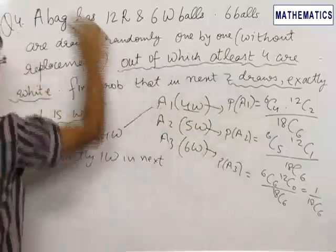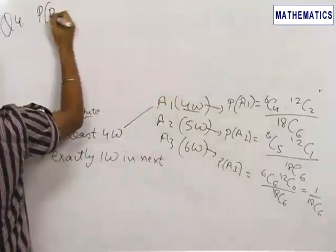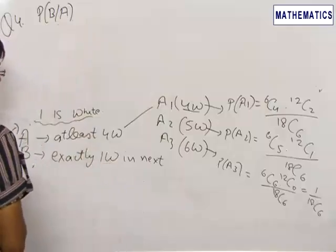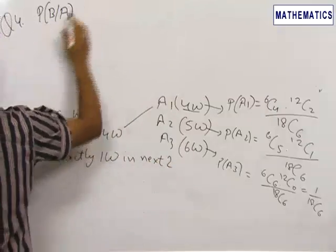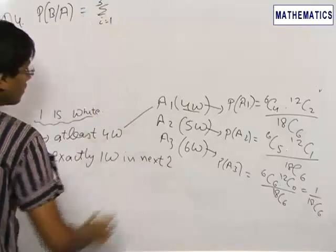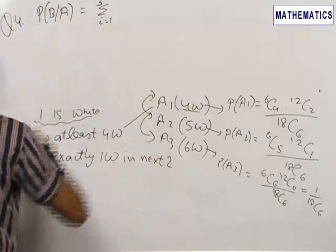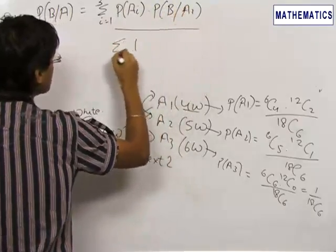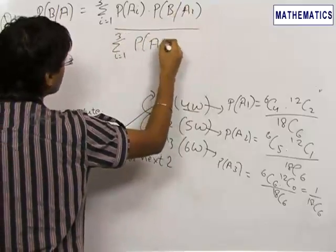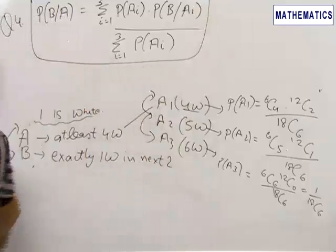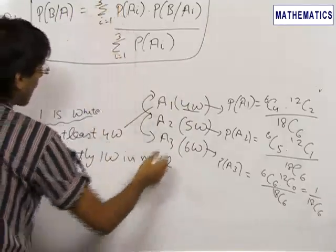Now we apply Bayes theorem. Bayes theorem states that P(B|A) equals the summation from i=1 to N of P(Ai) × P(B|Ai), divided by the summation from i=1 to N of P(Ai). Here N is 3 because there are 3 events involved. This is a very important formula. We use it to find the probability of exactly 1 white ball in the next 2 draws given at least 4 white balls in the previous 6 draws.